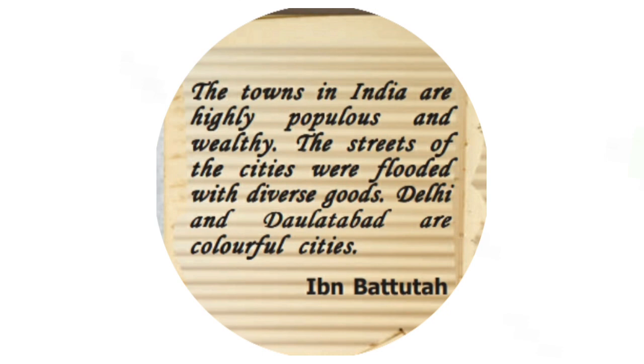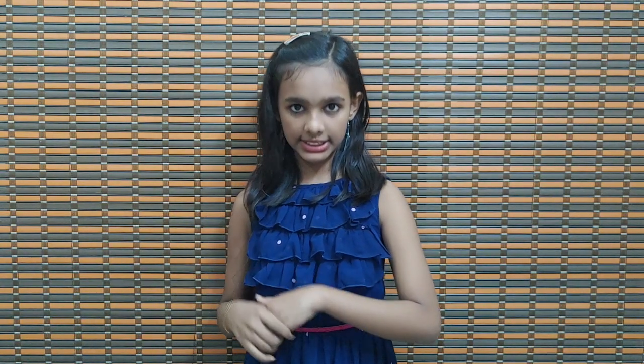Now we have a description by Ibn Battuta, a Moroccan traveller who reached India in the Sultanate period: 'The towns in India are highly populous and wealthy. The streets of the cities were flooded with diverse goods. Delhi and Daulatabad are colourful cities.' He is talking about the towns of India being filled with many costly and diverse goods, and he highlights Delhi and Daulatabad as colourful cities.